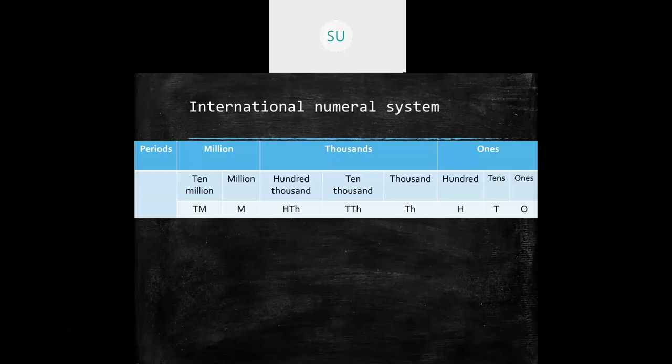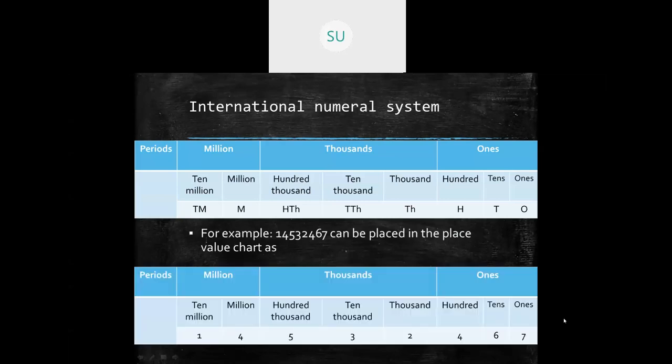After hundred thousands comes one million, which is equivalent to ten lakhs in the Indian numeral system. After one million is ten million, equivalent to one crore. After ten million is hundred million, equivalent to ten crores. Here is an example number placed in the international place value chart.